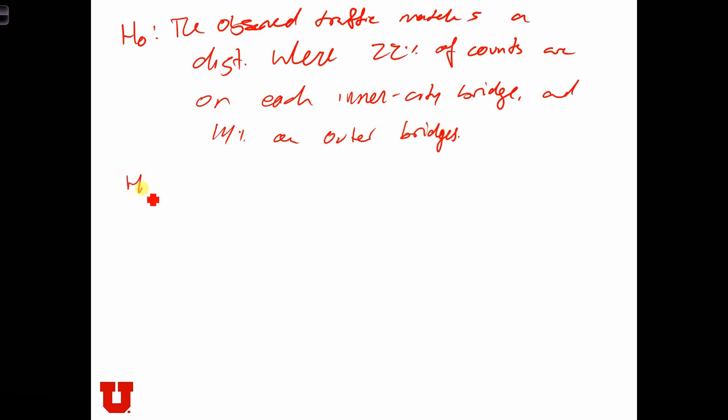And the alternative in this case is that that statement is not true, essentially. So that's always step one, null and alternative.